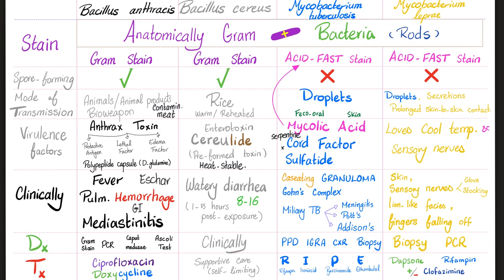Now comparing all four organisms: Bacillus anthracis, Bacillus cereus, Mycobacterium tuberculosis, and Mycobacterium leprae — all anatomically gram-positive rods, but only the two bacilli stain with gram; mycobacteria require acid-fast stain. Acid-fast techniques include Ziehl-Neelsen, fite stain, auramine-rhodamine, and auramine-phenol stains. Anthracis and cereus are spore-forming; the others are not. Transmission: anthracis via animal products, bioweapon, contaminated meat, or inhaled spores (wool sorter's disease); cereus via warm or reheated rice; TB via droplets, feco-oral, or skin — reactivation occurs with immunocompromise; leprae via droplets, secretions, or prolonged skin-to-skin contact.